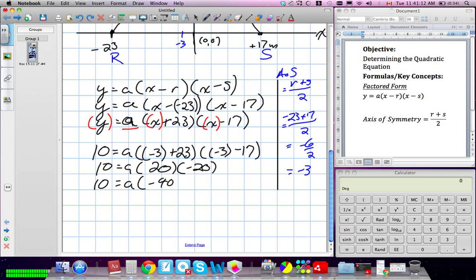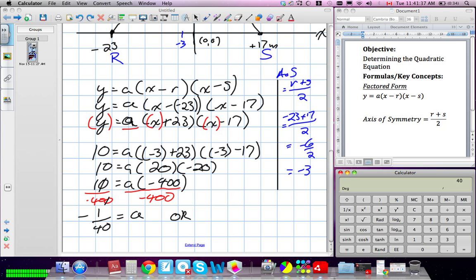10 equals A times negative 400. We need to move negative 400 to the other side. So, we are going to divide by negative 400. We're going to have A equals negative 1 over 40, or 0.025.